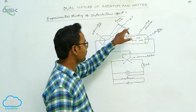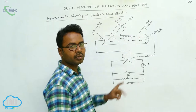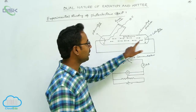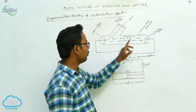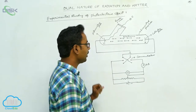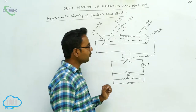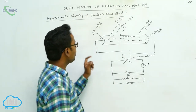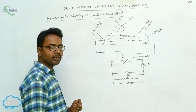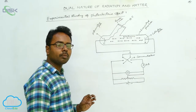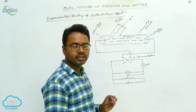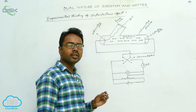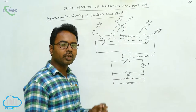This evacuated glass tube contains two plates. One plate is called the photosensitive plate and another is the collector plate. The photosensitive plate is connected to the negative terminal, and the collector plate is connected to the positive terminal of the battery. The photosensitive plate is made up of a material that is sensitive for the photoelectric effect — meaning it can emit electrons when exposed to light.